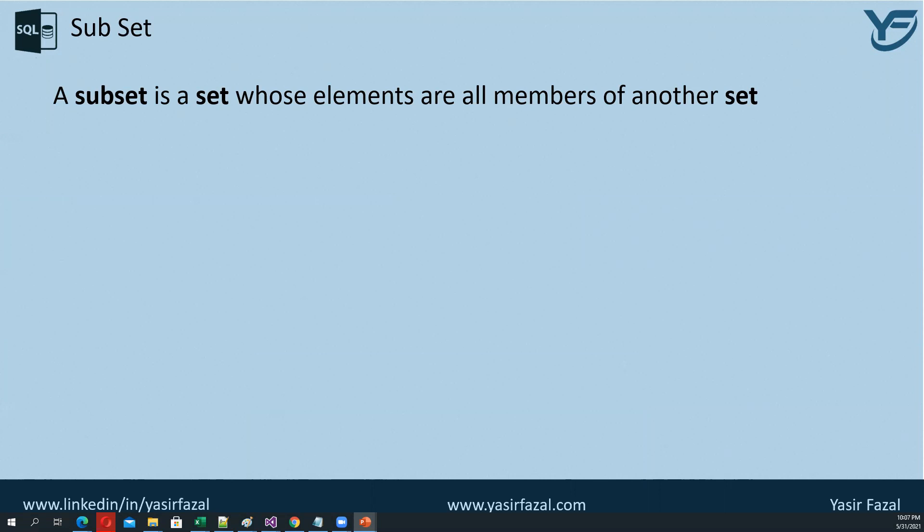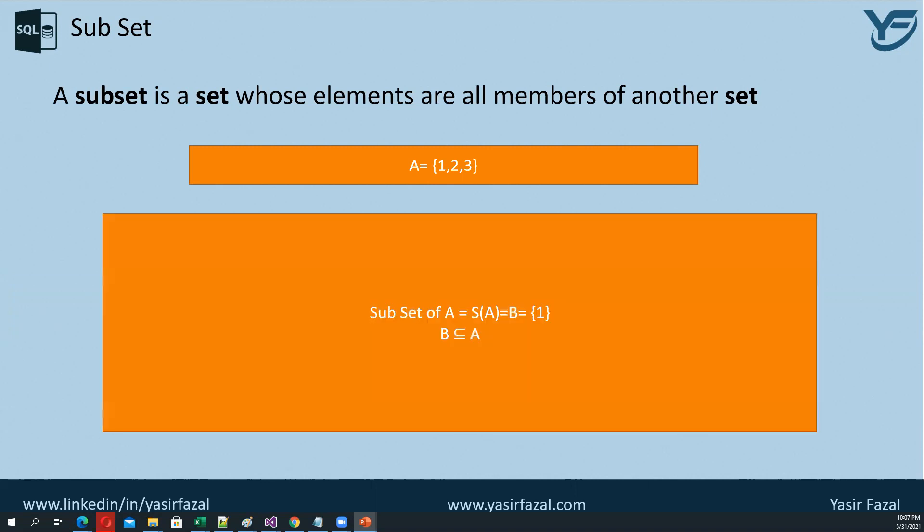Let's understand this with an example. Suppose I have a set A containing three values: 1, 2, and 3. Suppose there is another set B which contains two values: 1 and 3. So B is a subset of A because all members of set B are actually present in set A. Mathematically speaking, B is a subset of A.